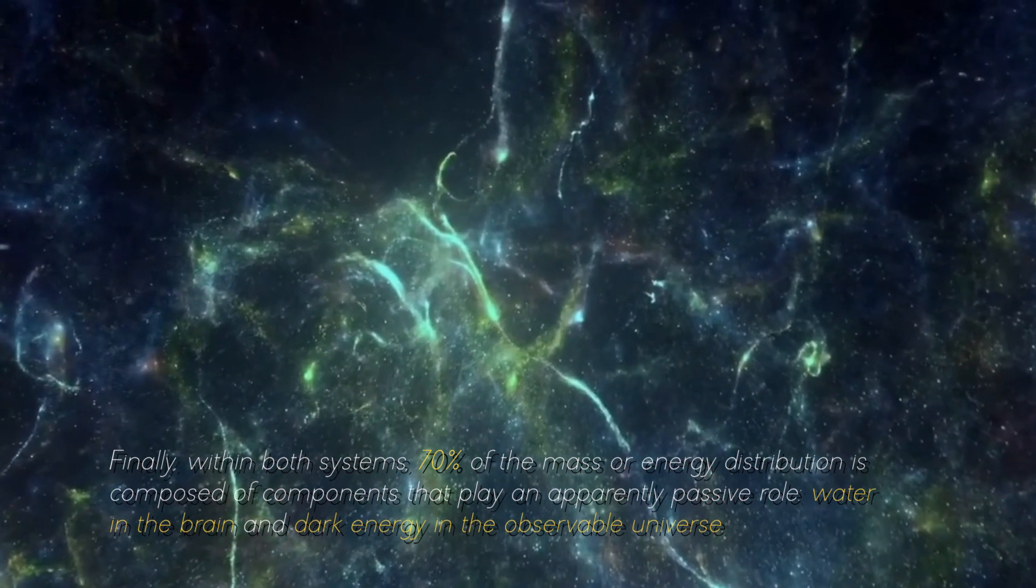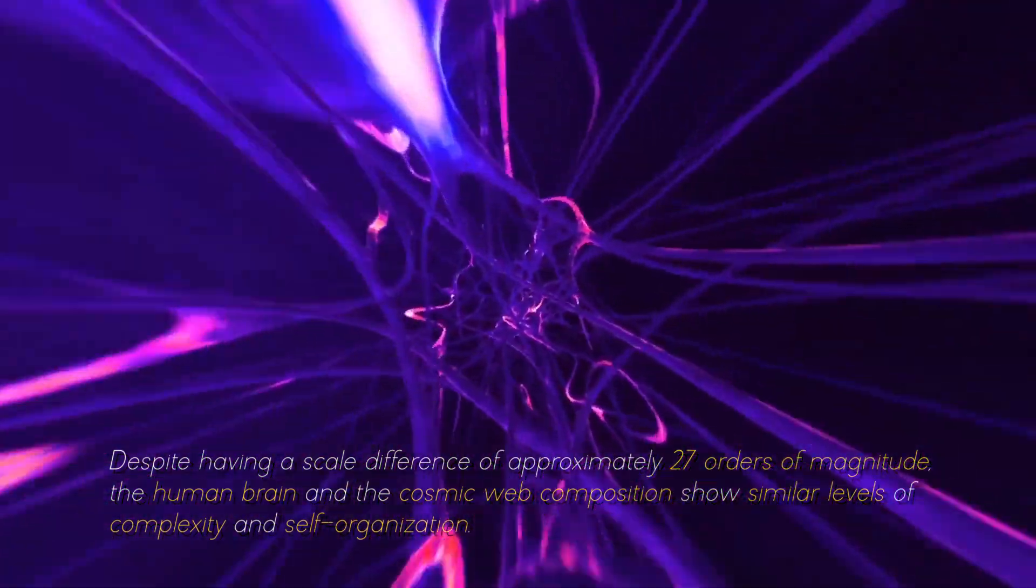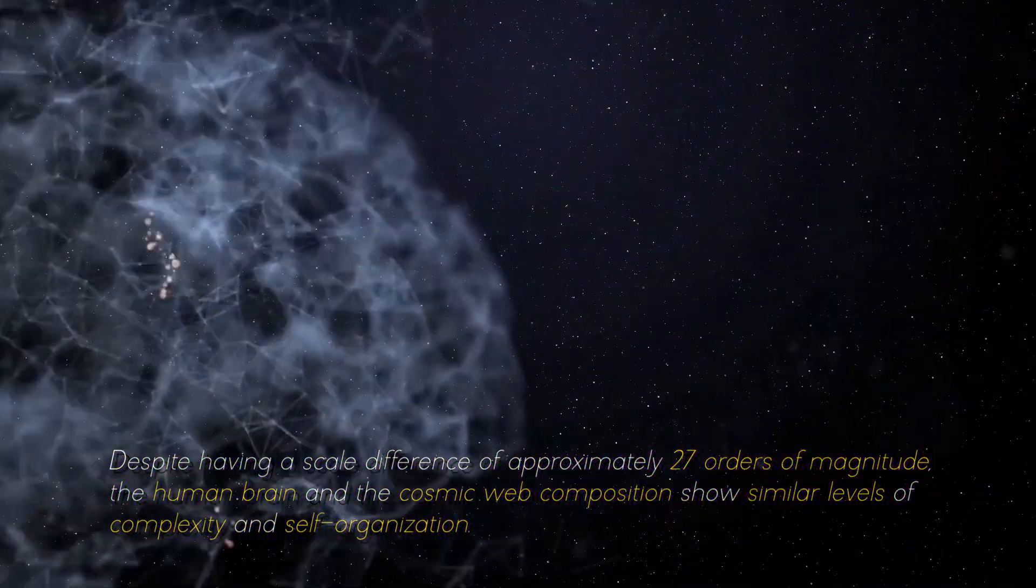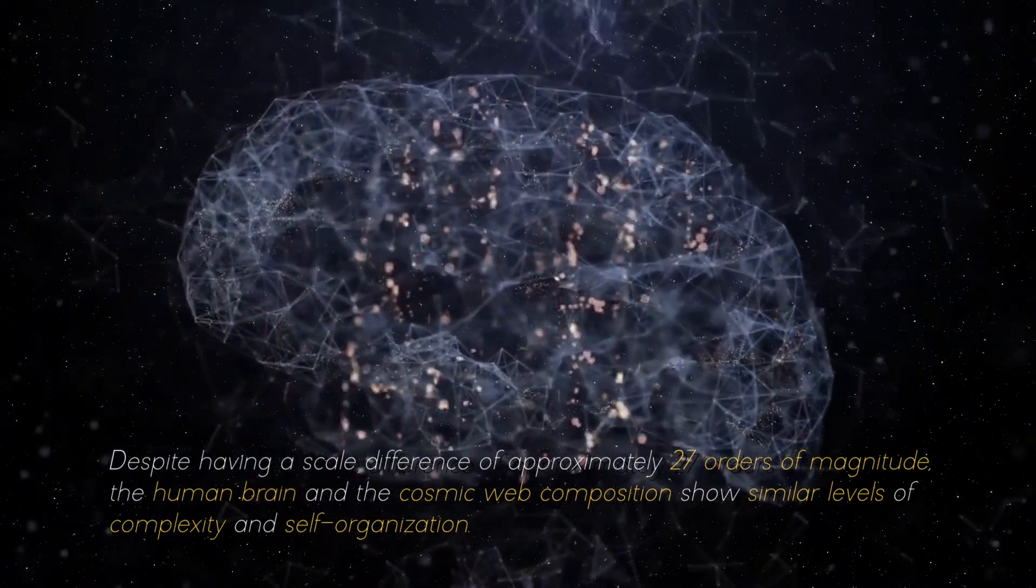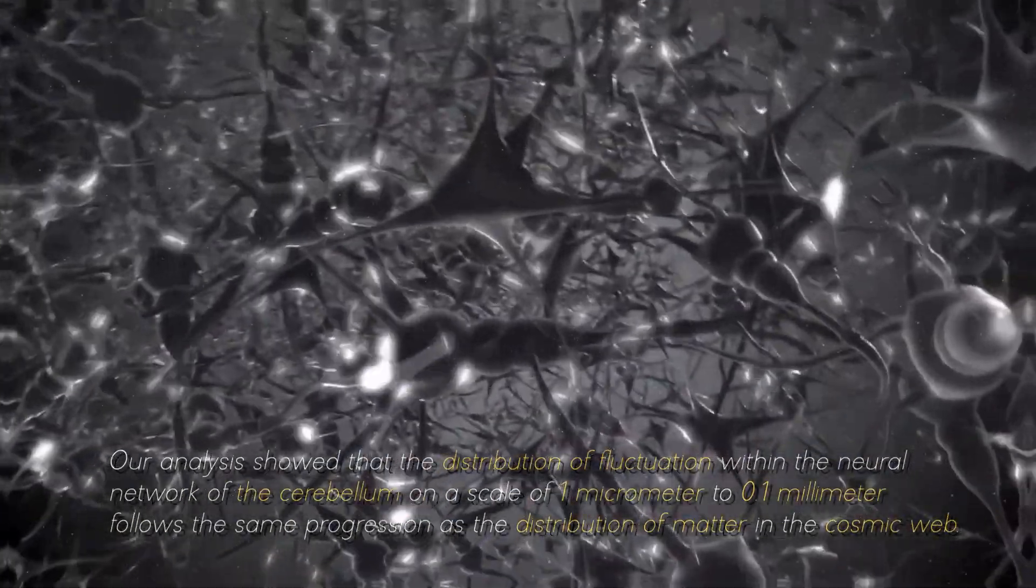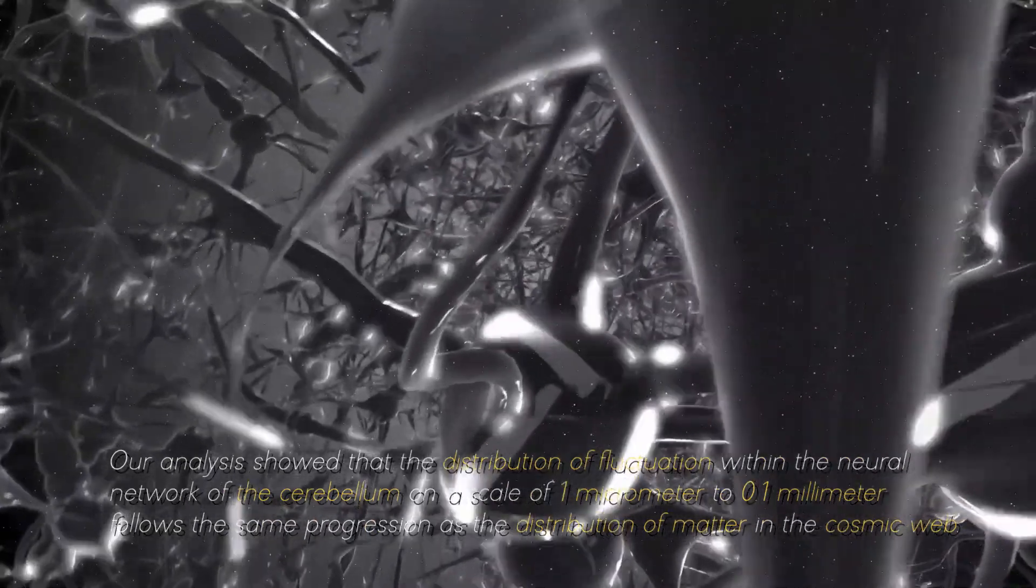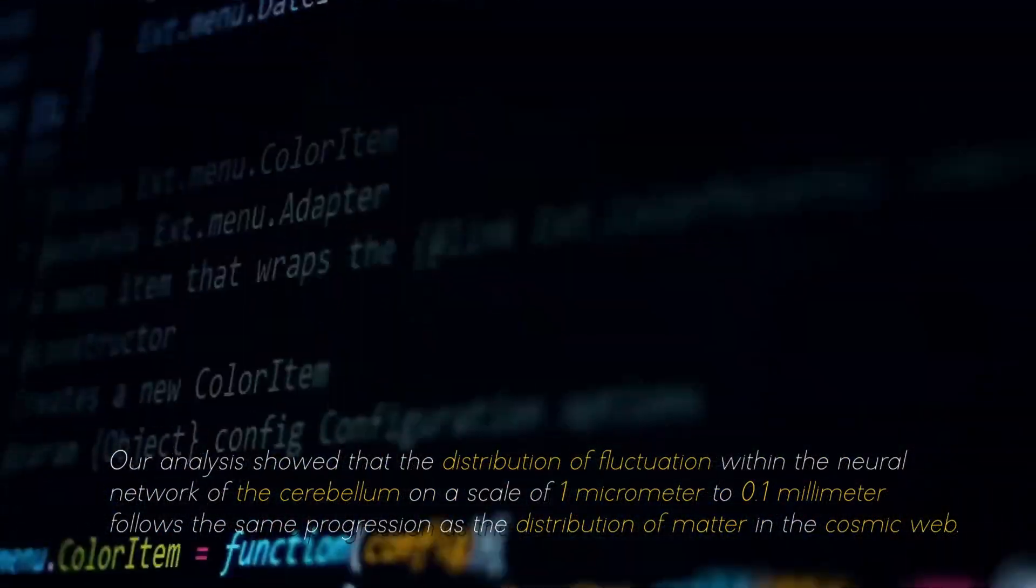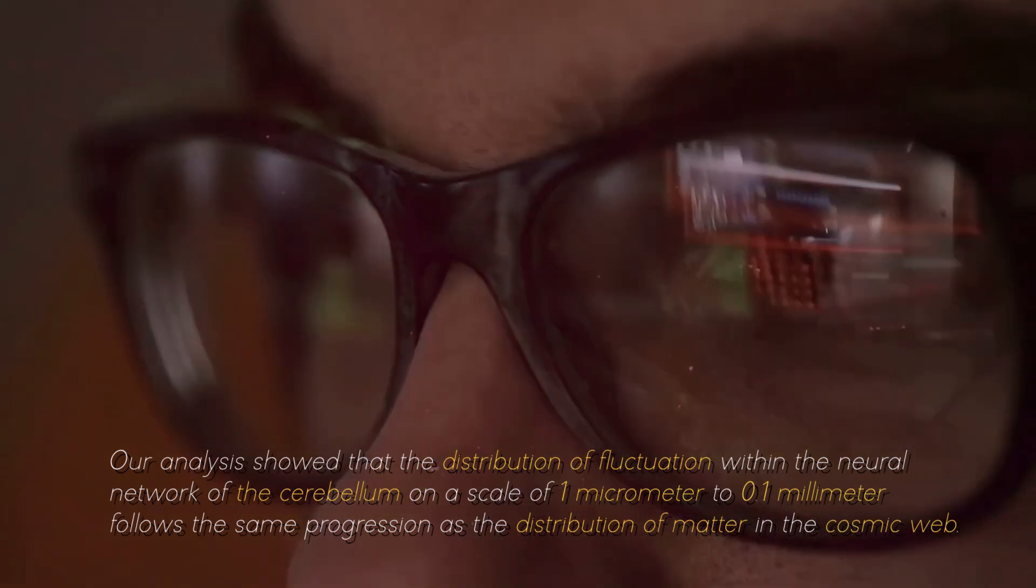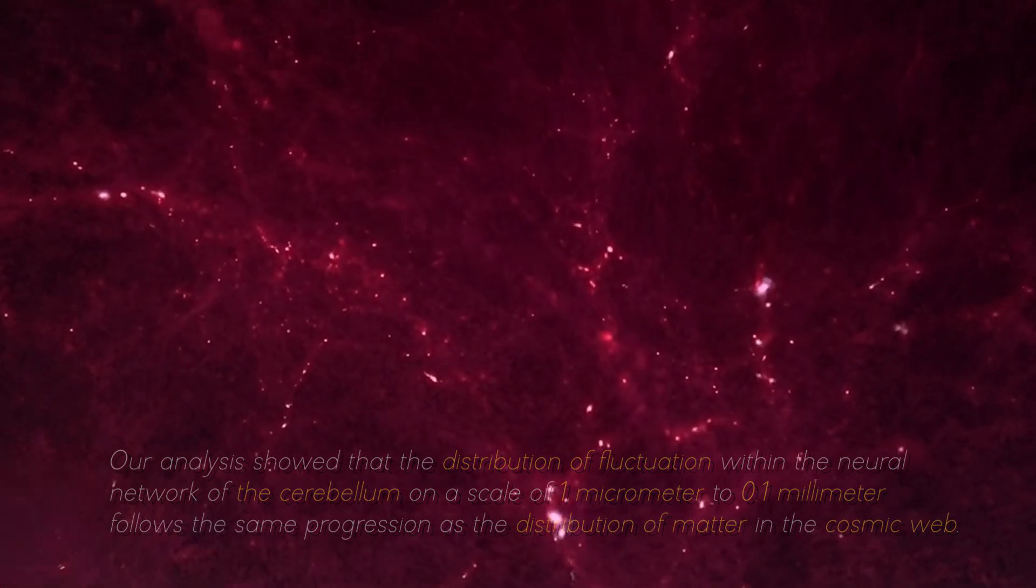water in the brain and dark energy in the observable universe. Despite having a scale difference of approximately 7 times orders of magnitude, the brain and the cosmic web composition show similar levels of complexity and self-organization. Our analysis showed that the distribution of fluctuation within the neutral network of the cerebellium on a scale of 1 micrometer to 0.1 millimeters follows the same progression as the distribution of matter in the cosmic web, commented one of the researchers in charge of this project.